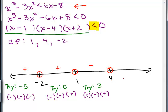And the last one, pick a number bigger than 4. Let's try 10. You can pick any number you want bigger than 4. If we're going to plug in 10 minus 1, 10 minus 4, 10 plus 2, all those are going to be positive. You end up with positive times positive times positive, and that's positive.